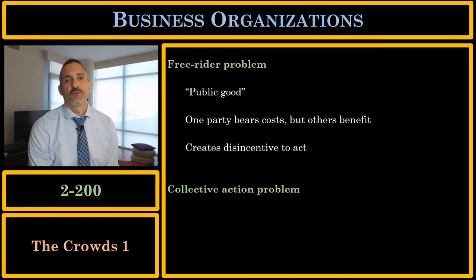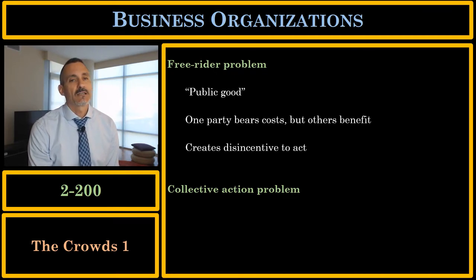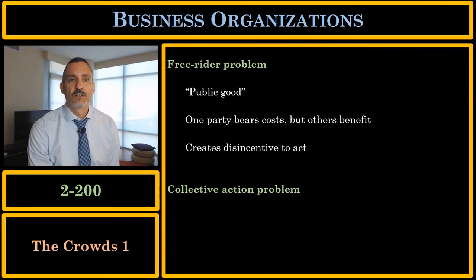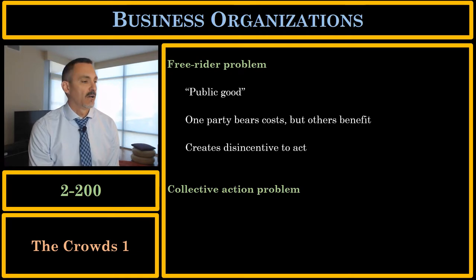Imagine you are a citizen of a town of about 50,000 people, and this town has a government. Are you monitoring the government to make sure that they are doing their job correctly and they are not corrupt? Think about it. Monitoring the government would have costs for you — information costs, time, money. And if you discover that the local government is not doing its job or that they're corrupt, everyone will benefit from it. Therefore, you have a disincentive to engage in the monitoring of the local government. Those are the transaction costs associated with a free rider problem.